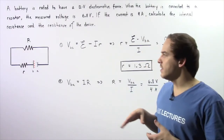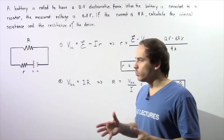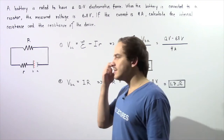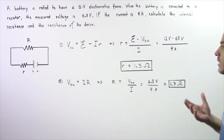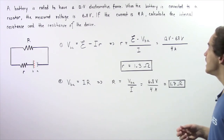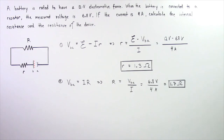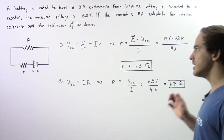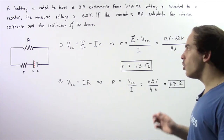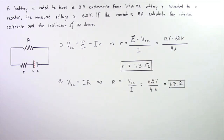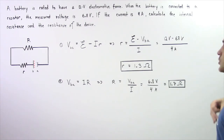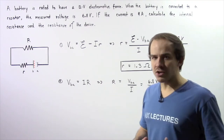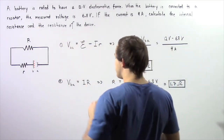Let's begin with the following example dealing with electromotive force and terminal voltage. Suppose a battery is rated to have an electromotive force of 12 volts. When the battery is connected to a device that acts as a resistor, the measured voltage drops to 6.8 volts. If the electric current in our circuit is assumed to be 4 amps, calculate the internal resistance of the battery and the resistance of our device.